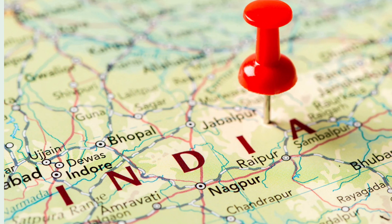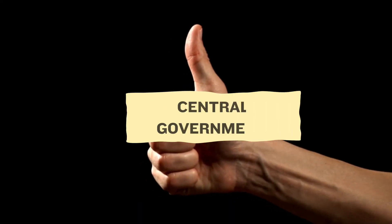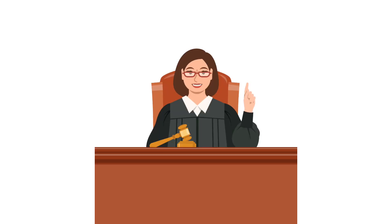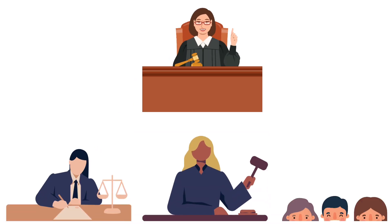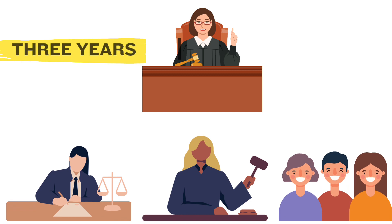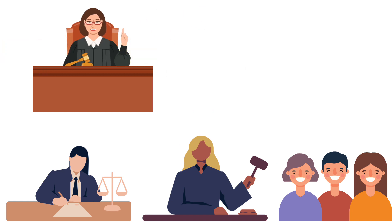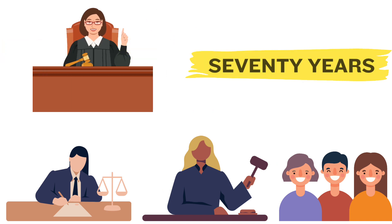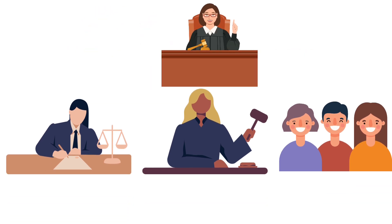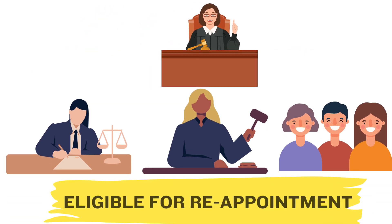The establishment of these offices requires prior approval from the Central Government. The chairperson and members of NHRC are appointed for a term of 3 years from the date they assume office, or until they reach the age of 70 years, whichever comes earlier. The chairperson and members are also eligible for reappointment.